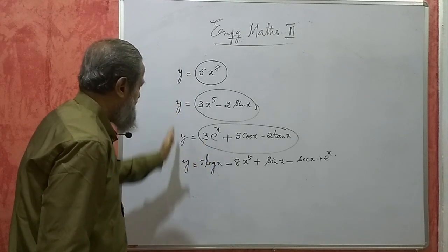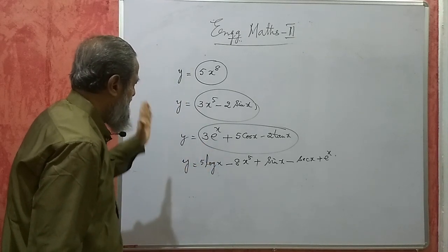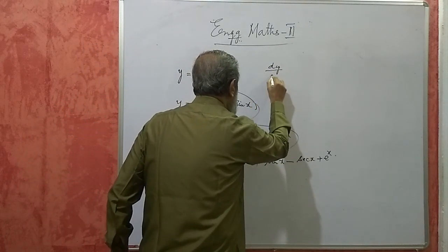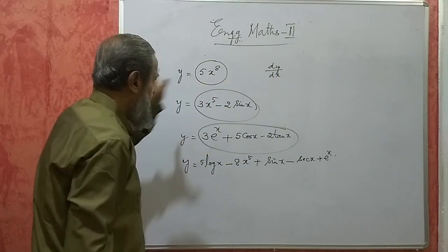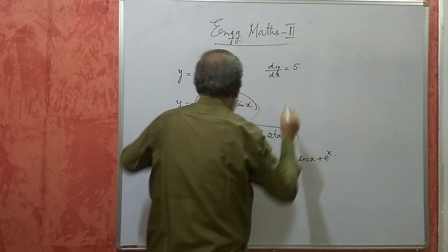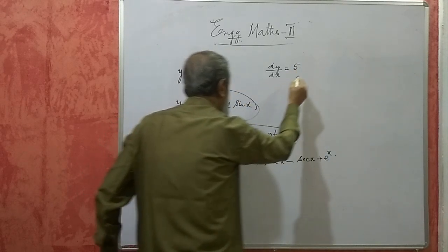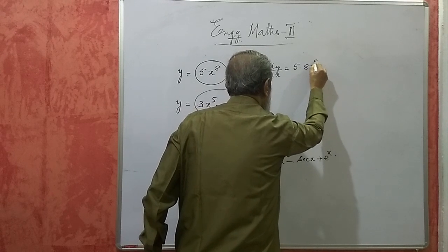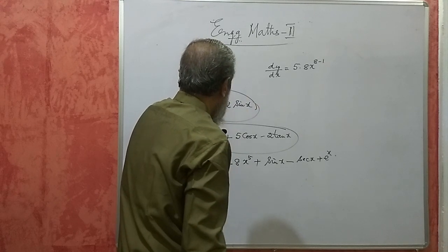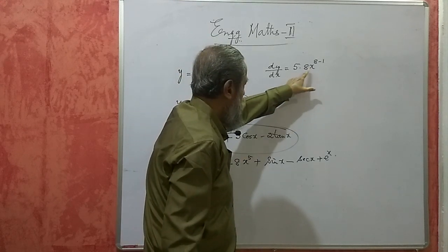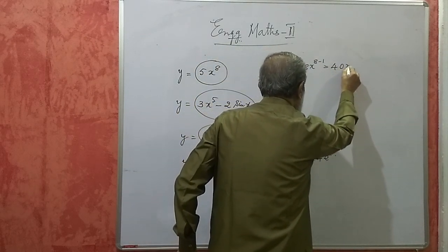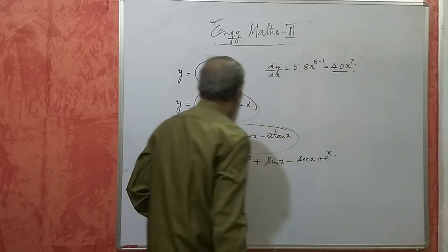Now for any such problem, the rule is: if I want the differentiation of y with respect to x, it is very simple. This 5 will remain as it is. The differentiation of x to the power of 8 is 8 into x to the power of 8 minus 1, because differentiation of x to the power of n is n into x to the power of n minus 1. So this will be 40x to the power of 7. This is dy/dx.